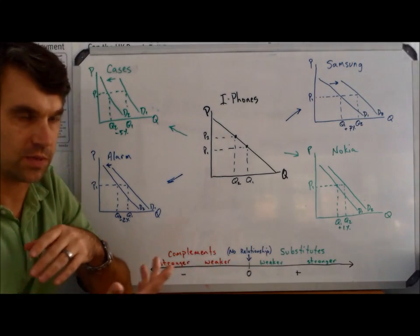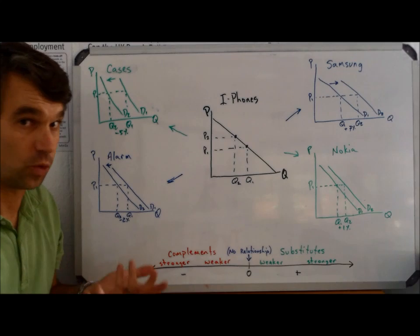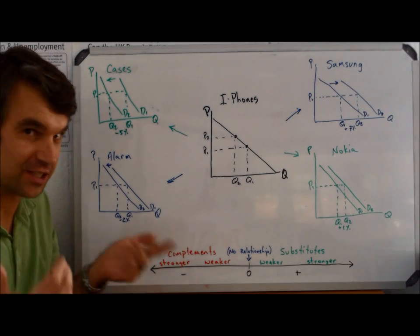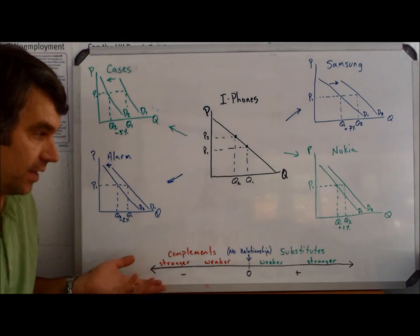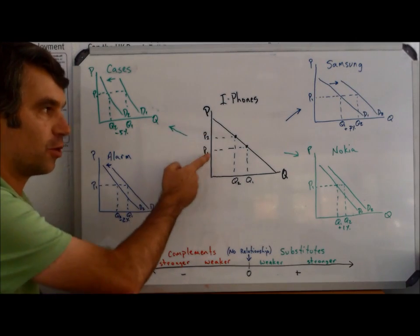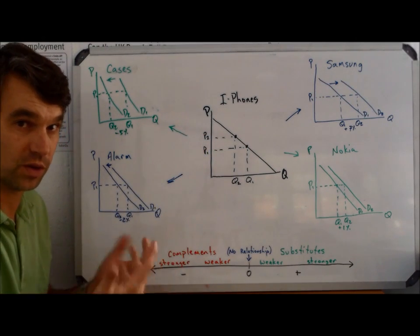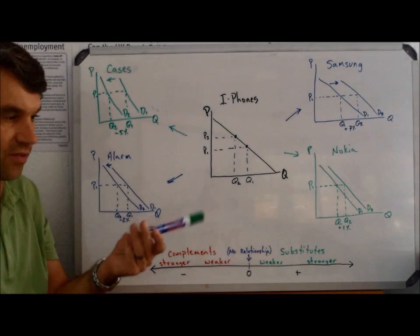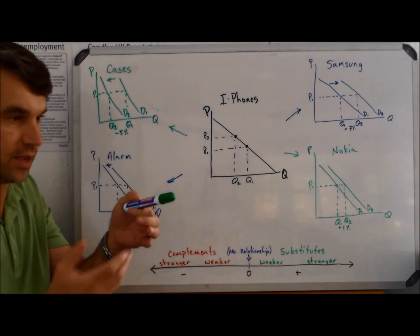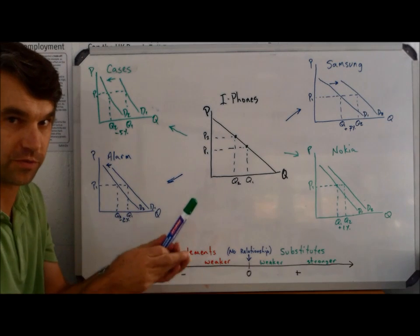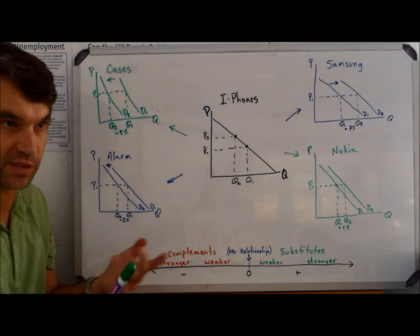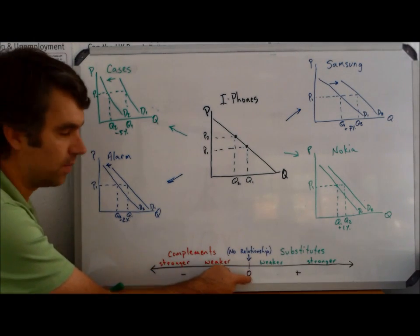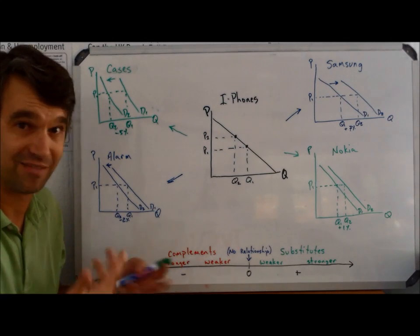We get a question sometimes of, what if the calculation comes up to be 0? Well then, what we're saying is, I changed the price of iPhones and whatever other product we're looking at, there was no change as a result. I would wager that, for example, whiteboard markers, there is no relationship between whiteboard markers and smartphones. I'm not going to buy more or less of these because I buy more or less smartphones. Our calculation would come out to be 0, and the important point is that we're pointing out that they have no relationship.